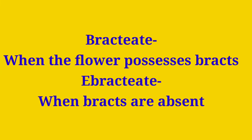The next term is bractate: when bracts are present at the base of the peduncle. Bracts are small, green-colored structures which develop from the peduncle or stalk of the flower. When bracts are present, the flower is called bractate, and when bracts are absent, it is called ebractate.